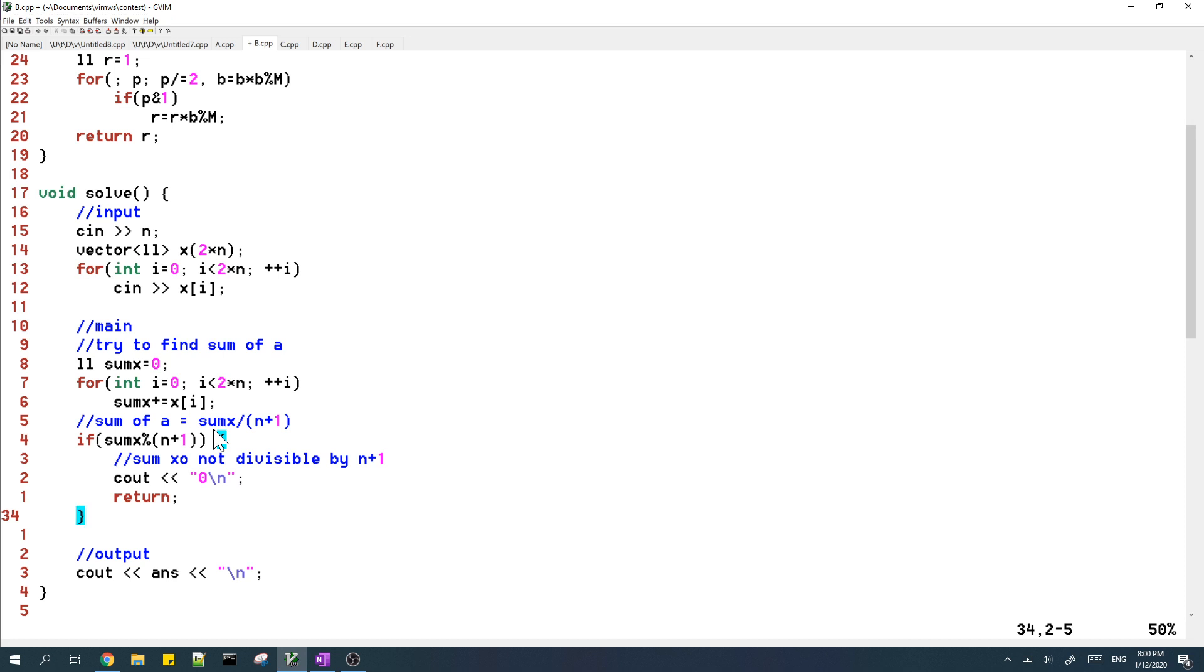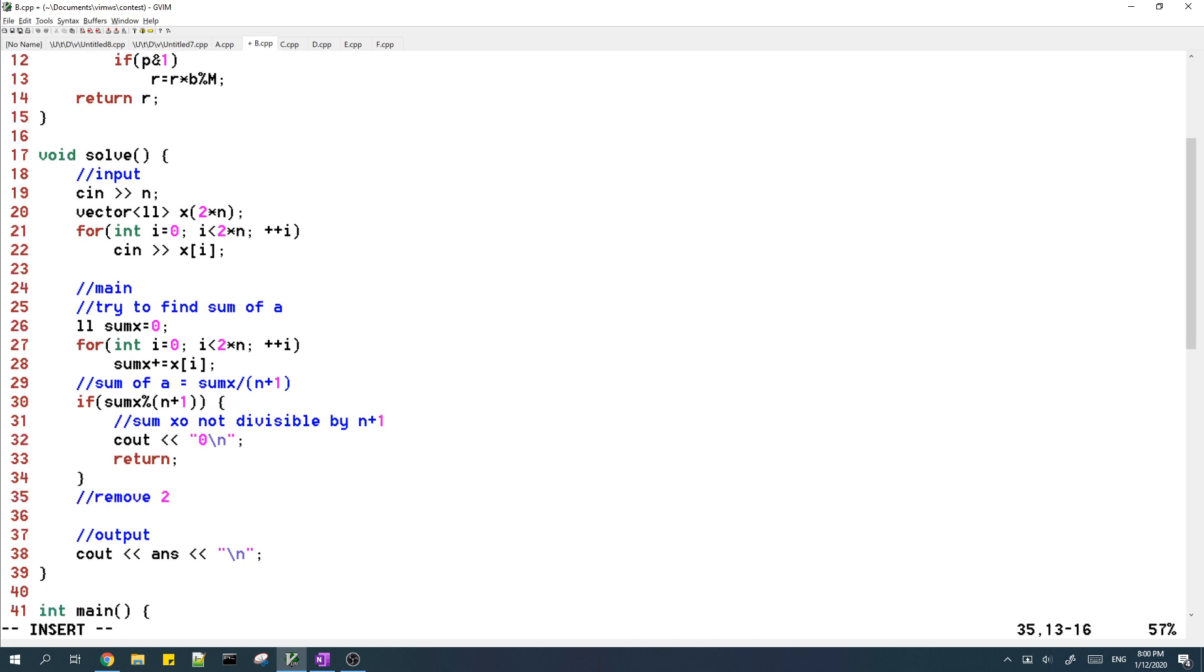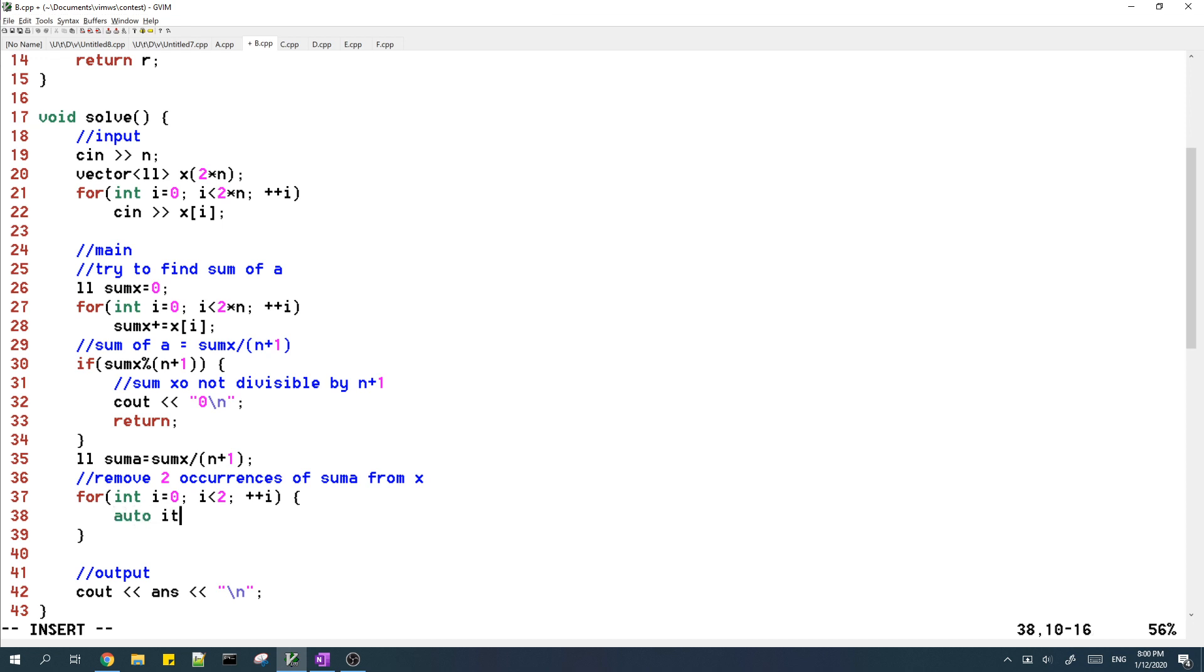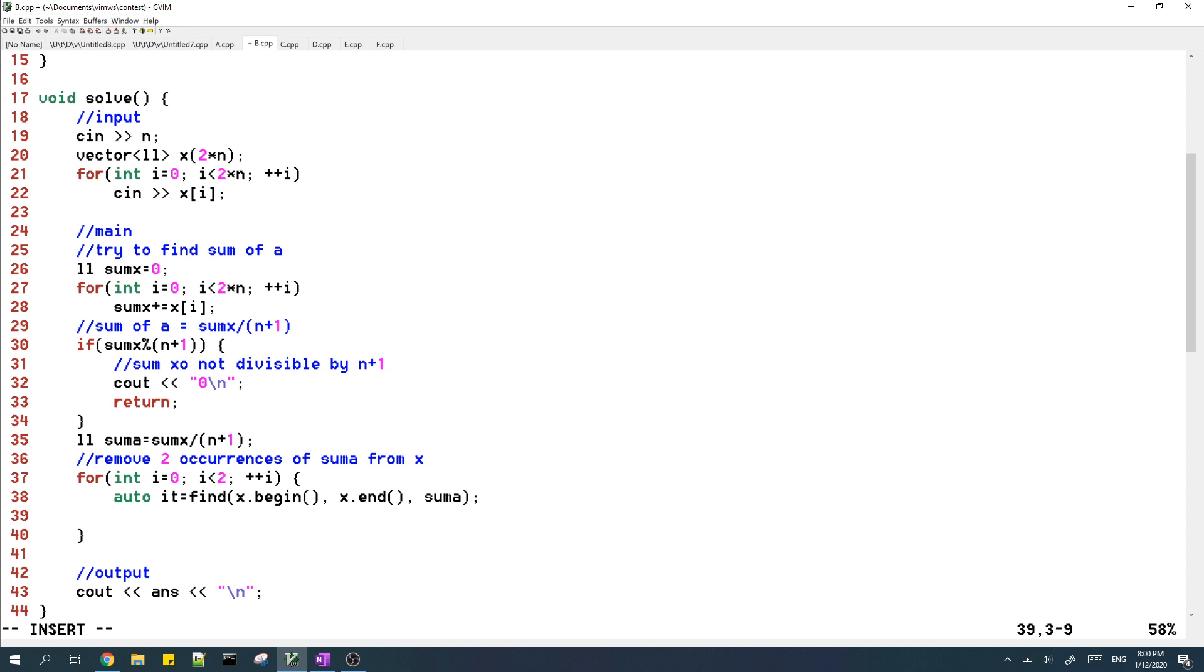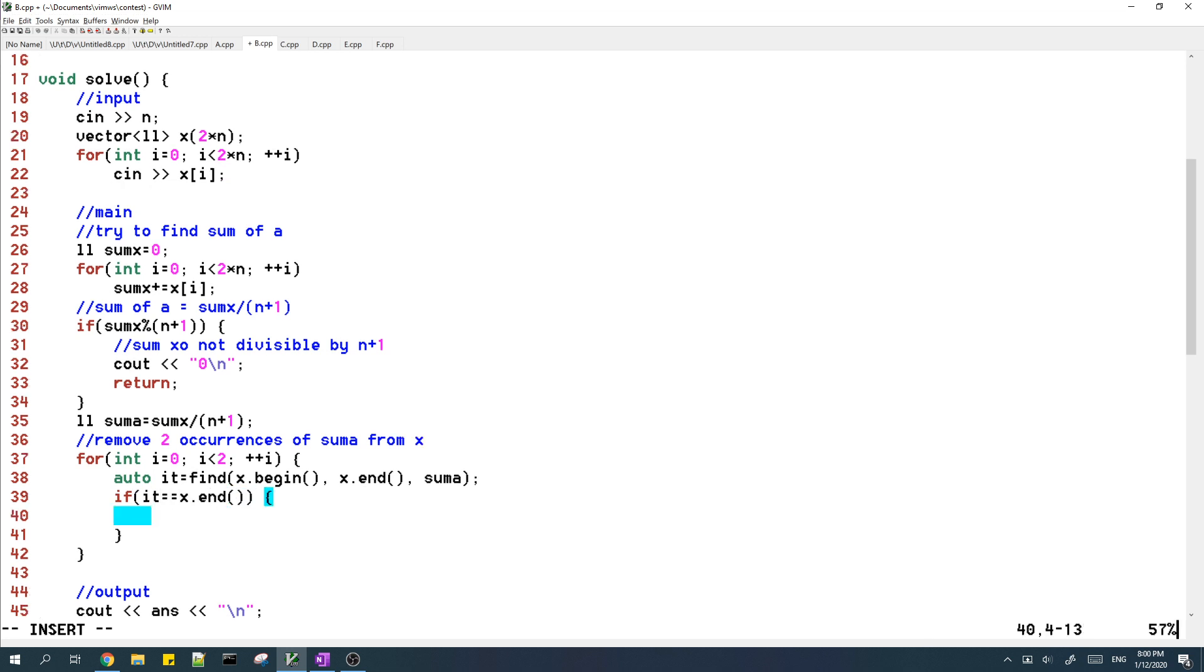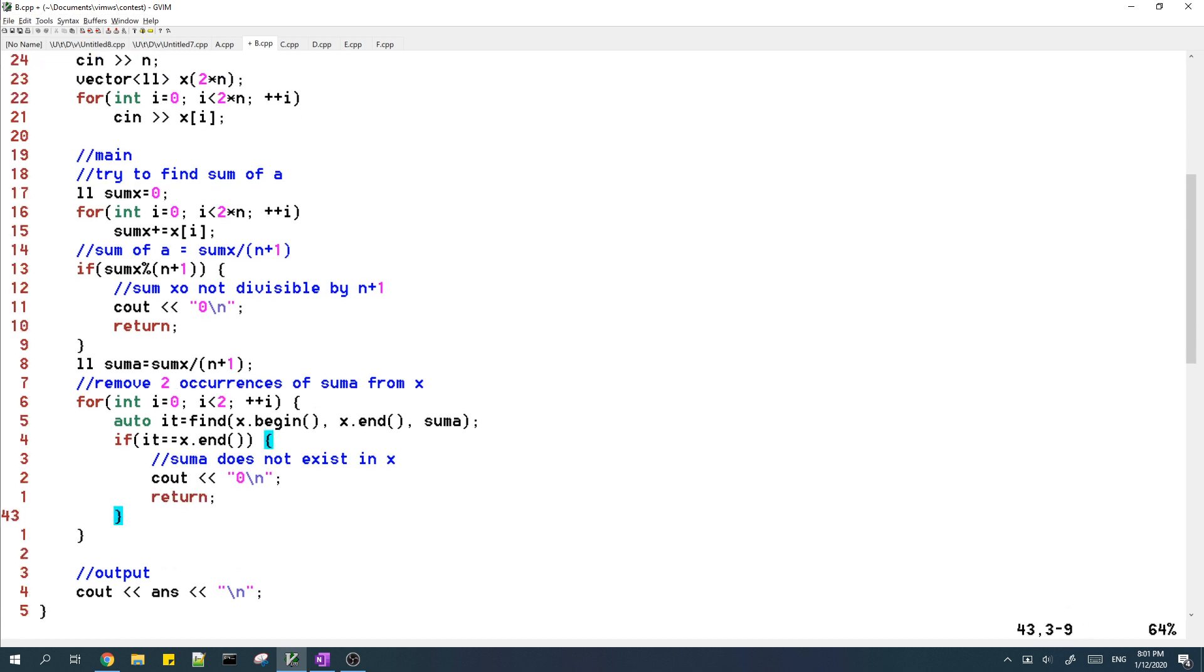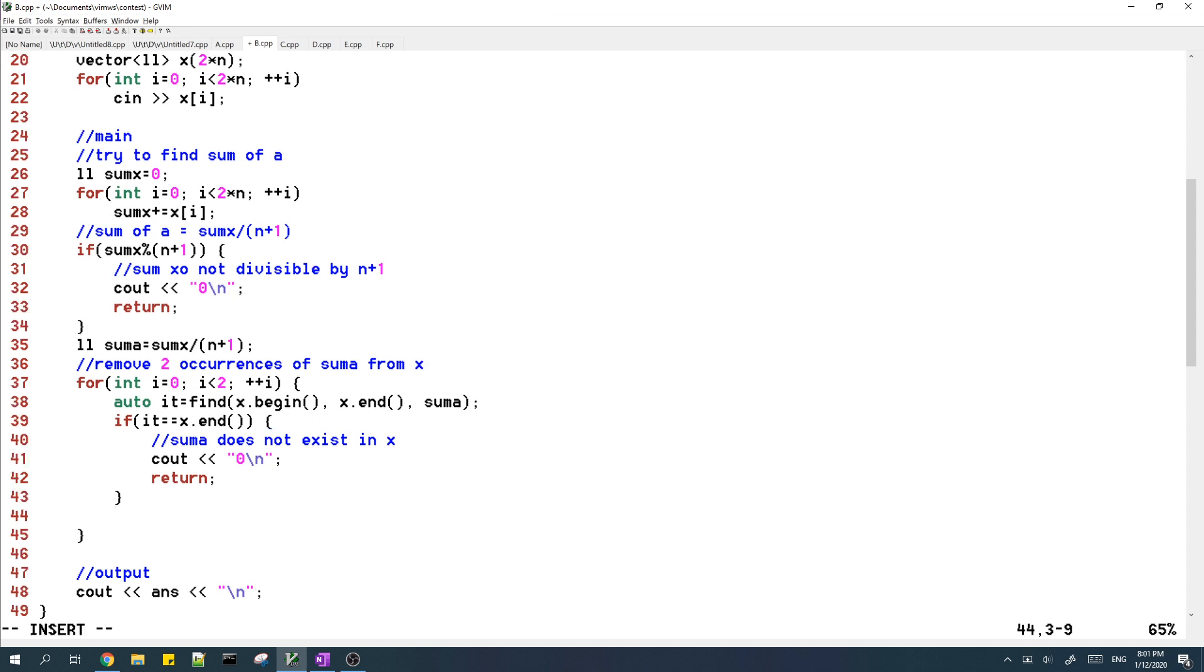So in the code here, we should remove two occurrences of sum a from x. And it might happen that sum a does not exist inside of x, so we need to check this case as well. In this case, if we can't find sum of a, then we need to return 0. Otherwise, we should erase sum of a from x.